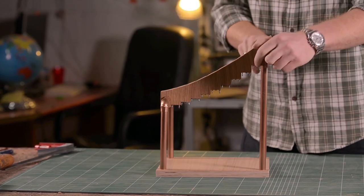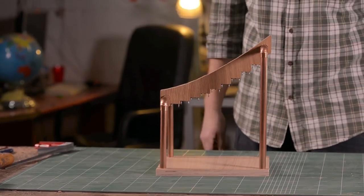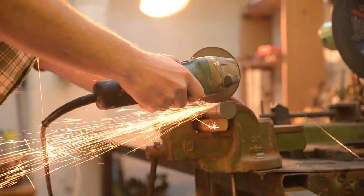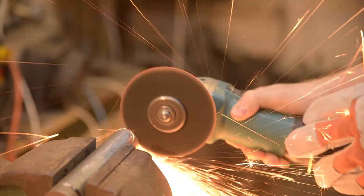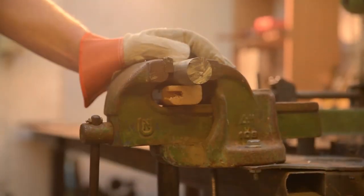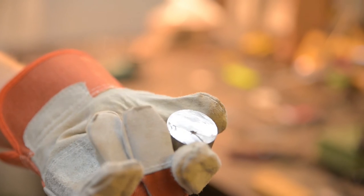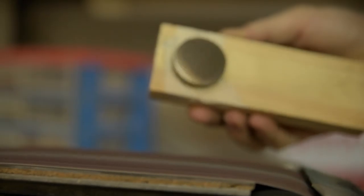Now I can start working on making the 9 pendulum weights. Using a cutoff wheel on my angle grinder, I sliced a 35mm diameter steel rod into 13mm thick slices. The angle grinder leaves kind of a rough surface, so I sanded each face on the belt sander.